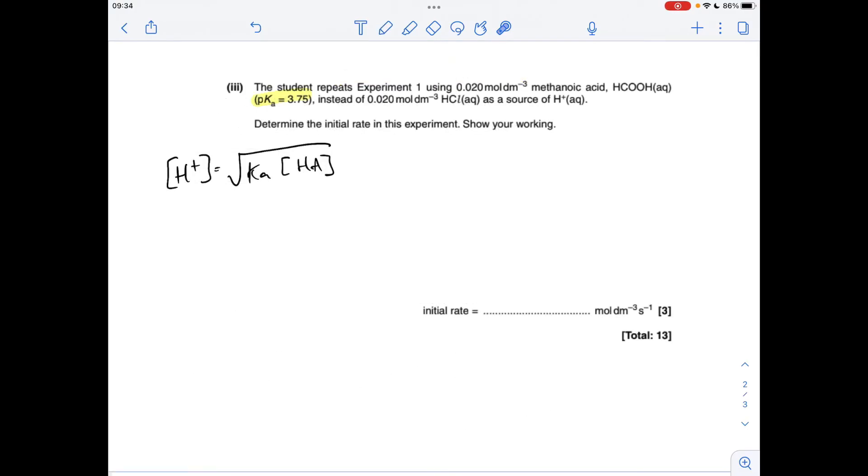So the last part's a bit of a curveball because they are dipping into acids chemistry. So they've switched the acid from HCl to methanoic acid. So effectively, they've gone from using a strong acid to a weak acid. And there's another clue that it's a weak acid is they've given us the pKa value. So we need to calculate the H plus concentration and then we can use that in the rate equation to get the initial rate.